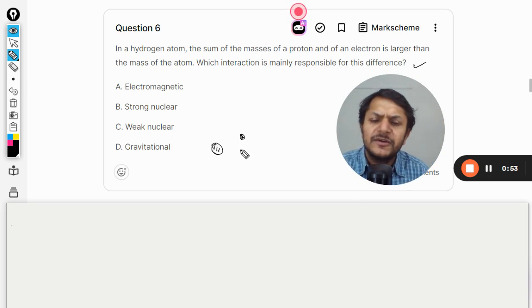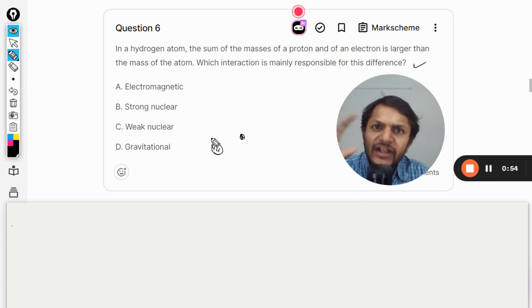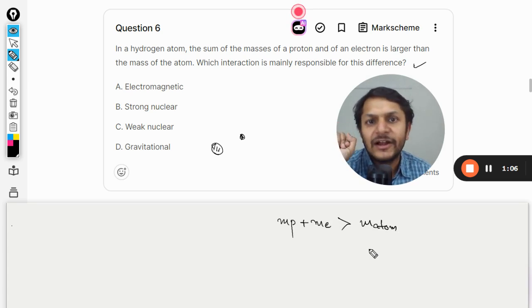Some difference in the mass takes place. The mass of proton plus mass of electron individually comes out to be greater than the mass of the atom which is having one proton and one electron.